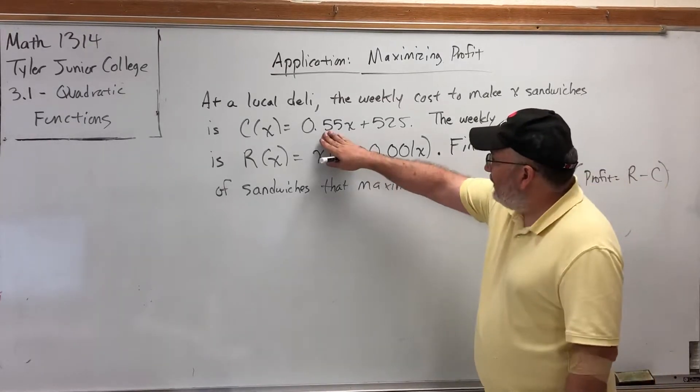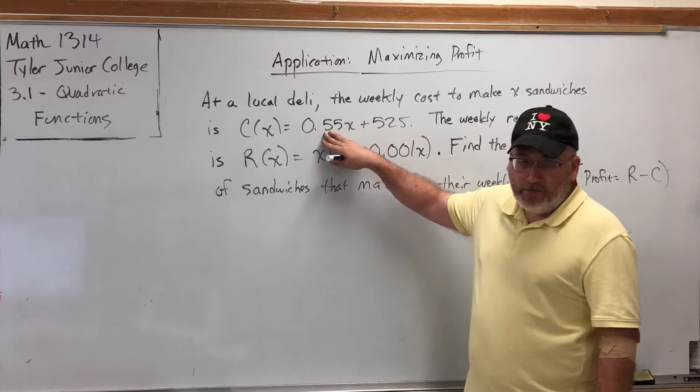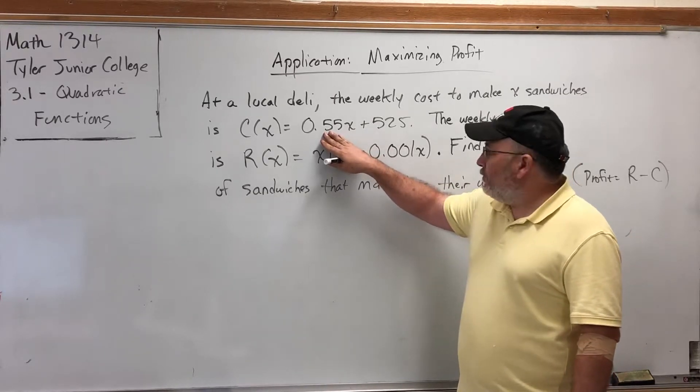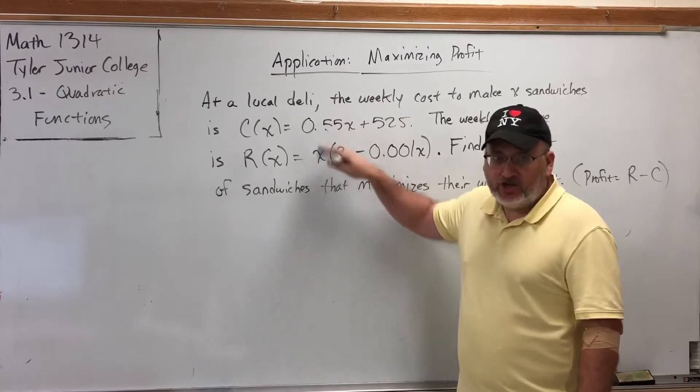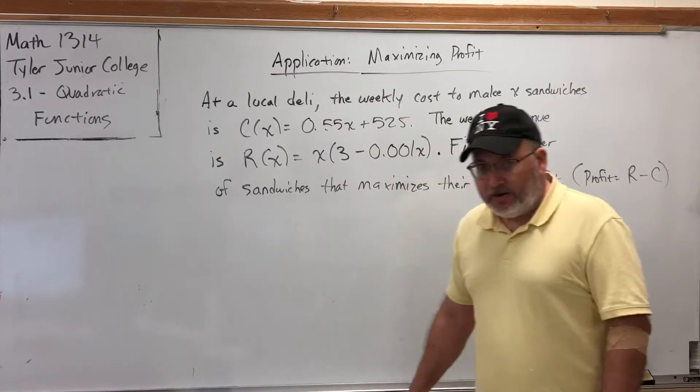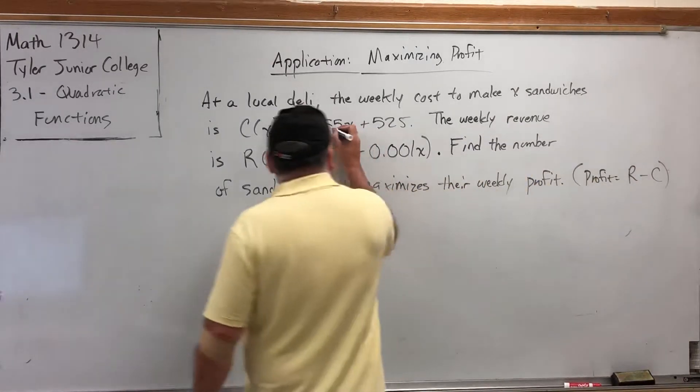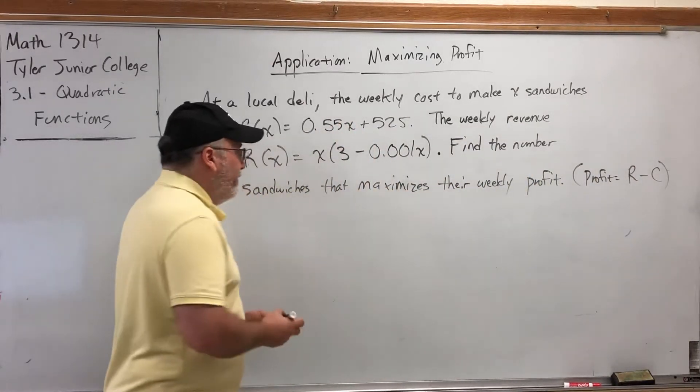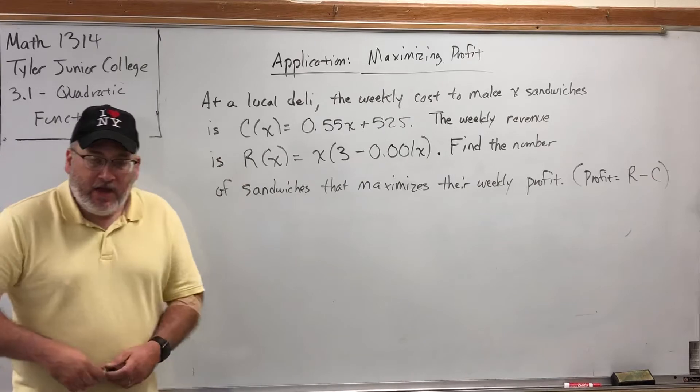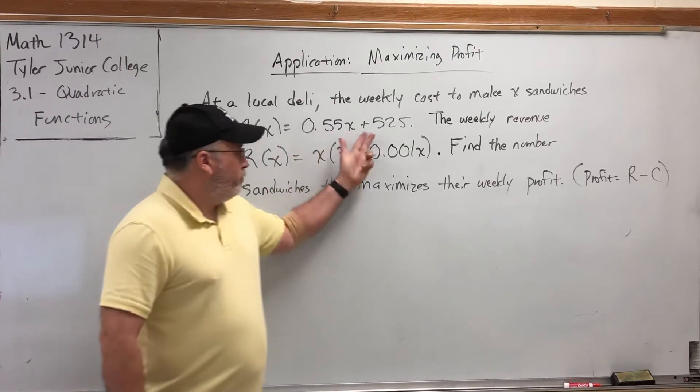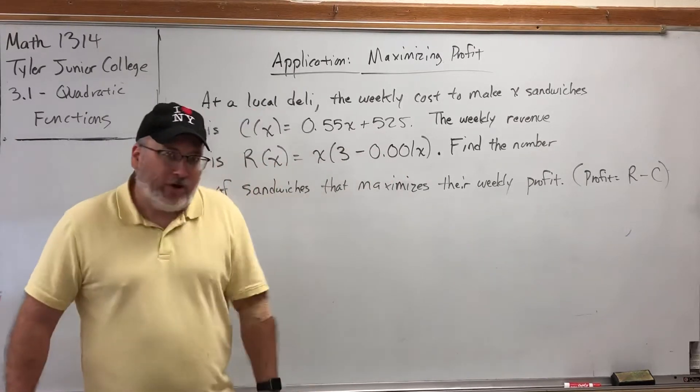The 0.55 in front of the X, the slope if you will, represents what's called a variable cost. For each sandwich they make, their cost goes up by $0.55, or 55 cents. So it costs them 55 cents for each sandwich they make. Now that probably accounts for things like labor and for the ingredients to make the sandwich. So 55 cents per sandwich plus the 525 up front.